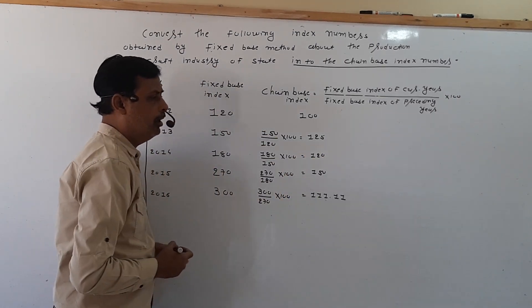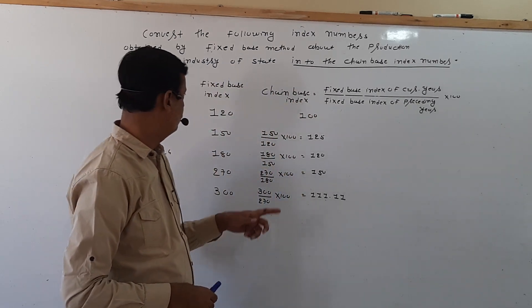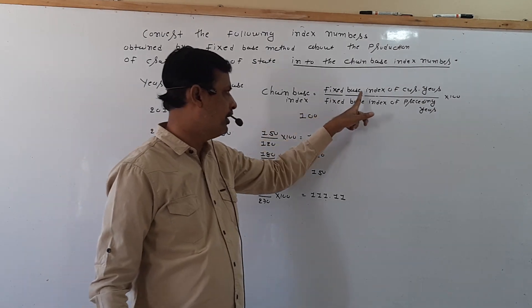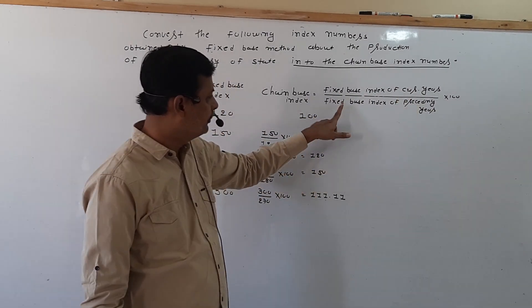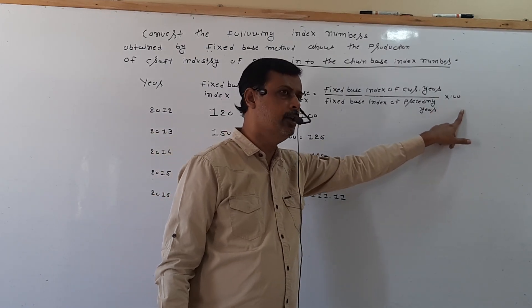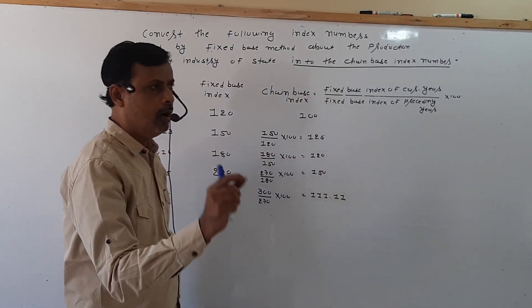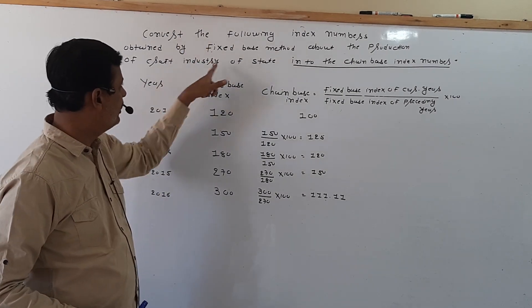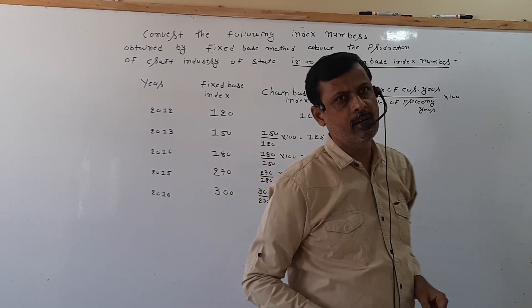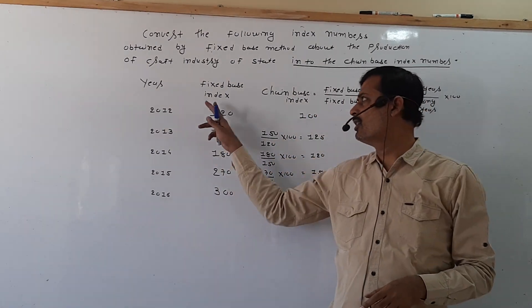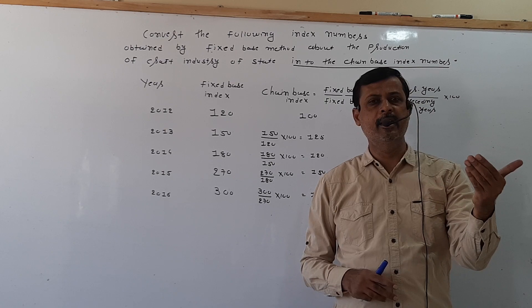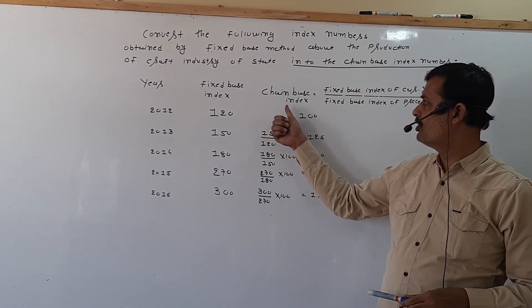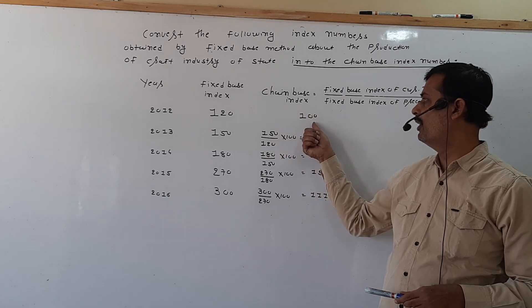So in this example, we convert the fixed base index using the formula: fixed base index of current year upon fixed base index of preceding year, into 100. One thing to remember: in this example, the base year is not mentioned, and whenever you convert fixed base into chain base and the base year is not given, we will take the first year chain base index as 100.